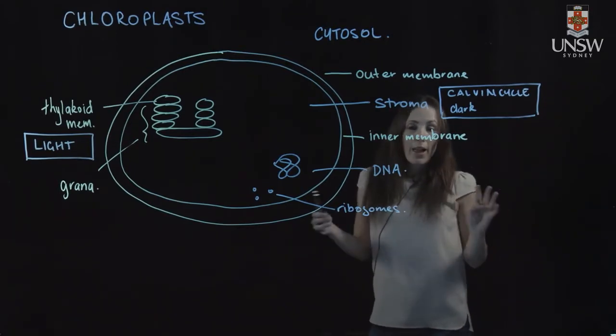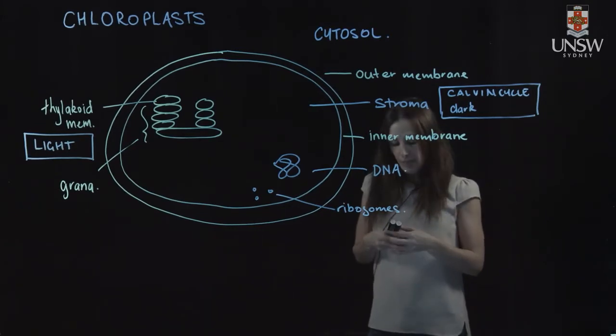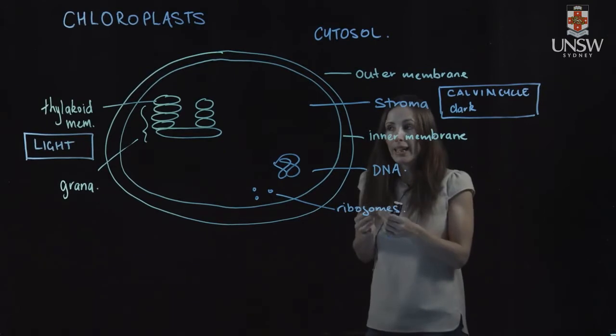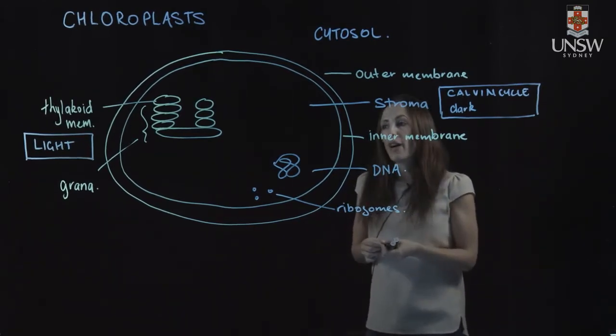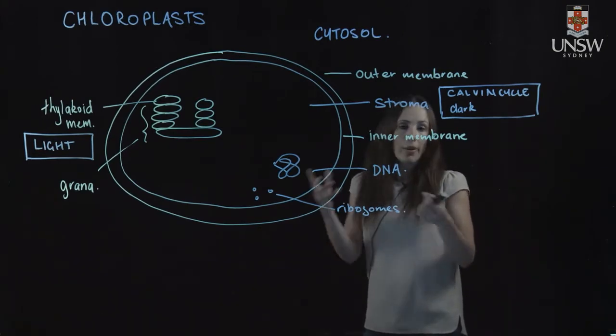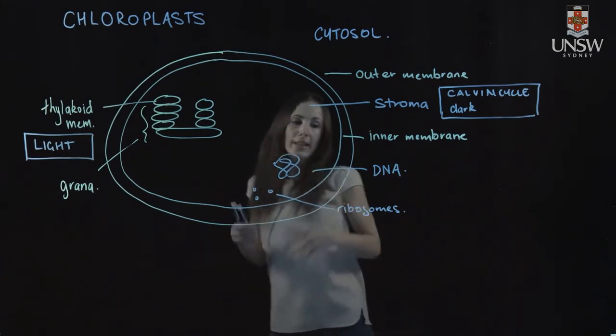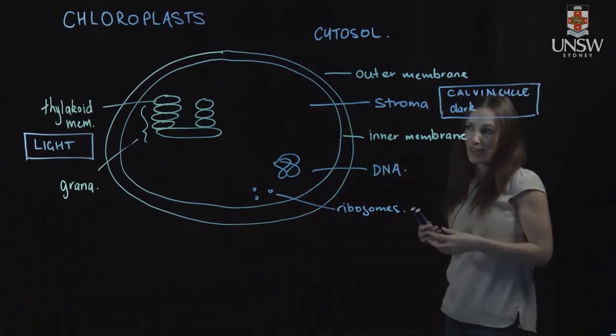There are about 30 to 40 chloroplasts approximately per cell. So 30 to 40 of them. And in plant cells, most of these will be in the soft tissue of leaves. And we find them in all the green parts of a plant. So this is our structure of chloroplasts that are our factories for carrying out photosynthesis in eukaryotic cells.